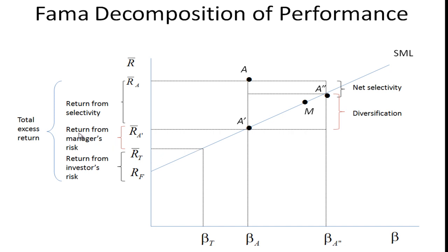First, there's the return that the investor gets for the level of risk that he's willing to take. Then you get some extra return because the manager took on additional risk over what the investor wanted. And then you get some extra return from selectivity, from the securities that the portfolio manager selected. If he had just chosen this level of risk and chosen a portfolio that was efficient, or a combination of RF and M, he'd be right here. But he didn't. So he managed to pick some stocks that outperformed the market, causing the portfolio to do better.